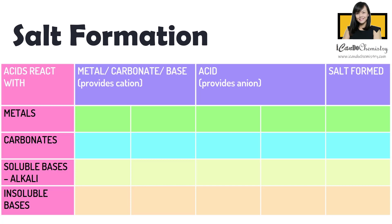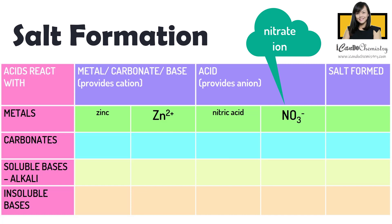Let's check out the different possibilities in this table. We will now focus on the reaction of acids with metal. Let's consider the reaction between nitric acid and zinc metal. Zinc will provide the cation, and we have Zn2+, and nitric acid will provide the anion — we will have NO3-, which is the nitrate ion.